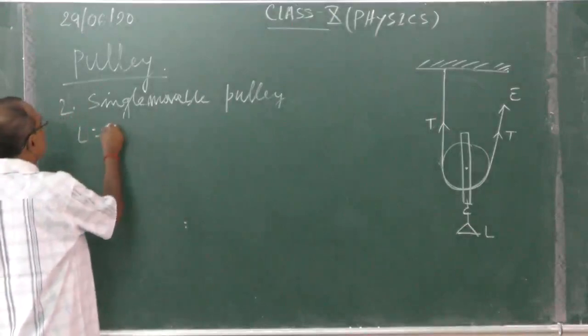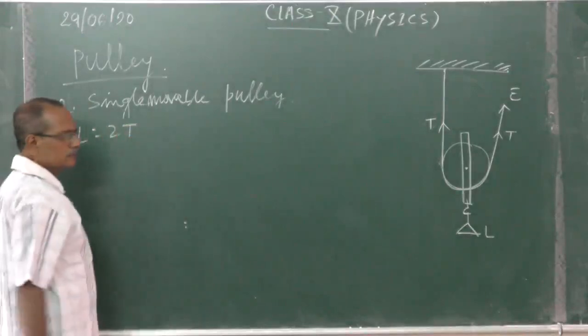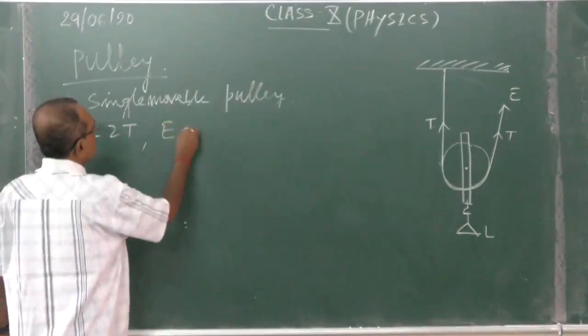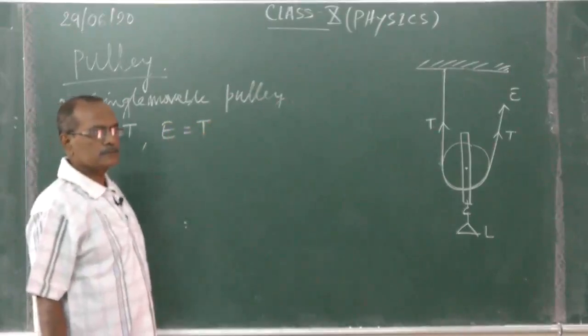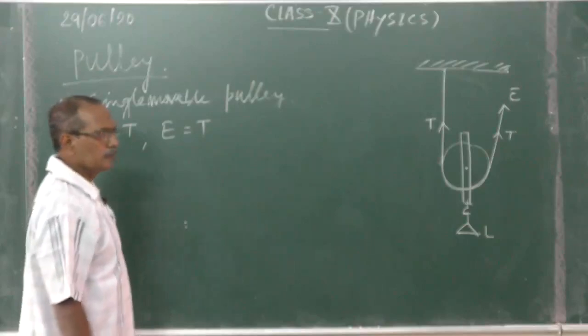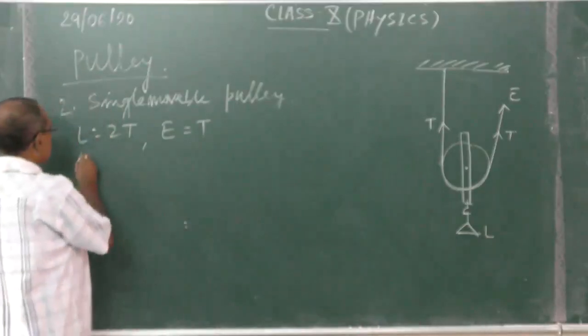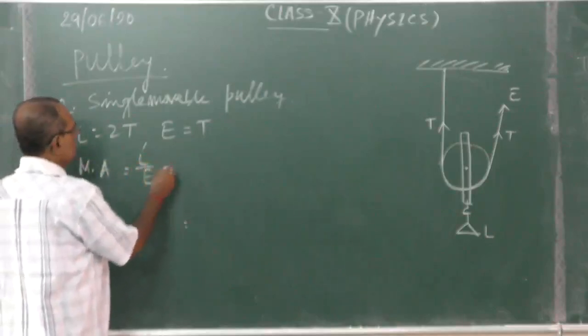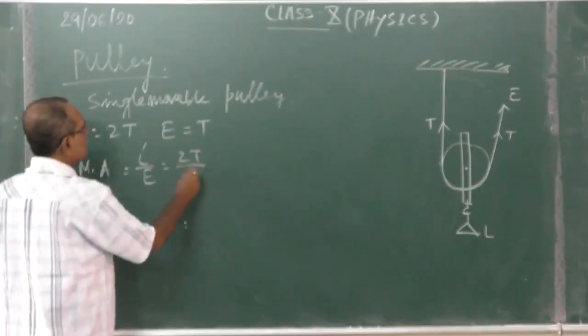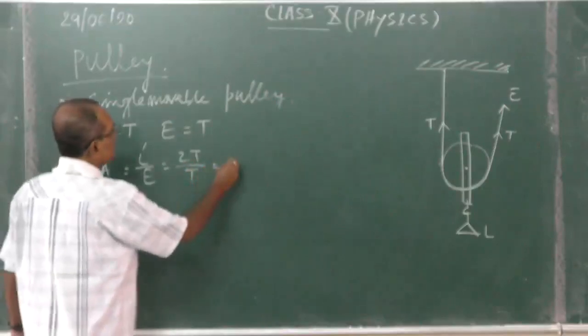So in this case what happened, load is balanced by two tensions. Just say these two are pulling the load. So therefore, load is equal to 2T, effort is balanced by 1T tension. Now, mechanical advantage is equal to L by E, that is 2T by T, that is equal to 2.